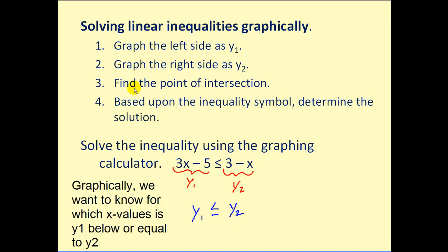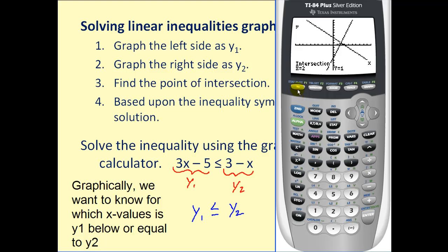So what we're going to do then is graph them, find the point of intersection, and then based upon this inequality, we'll determine the solution. Let's get our graphing calculators out. As you can see, I've already typed y₁ and y₂ into the calculator. Let's go ahead and press graph. Now since this line here is going up from left to right, I know this is y₁ because it has a positive slope, and this is y₂. We want to know where y₁ is below y₂. This piece here represents our solution. So we want to know for which x values is this line below this one.